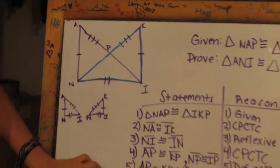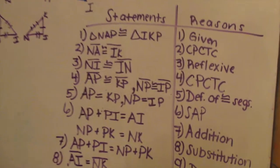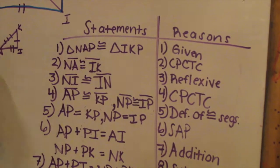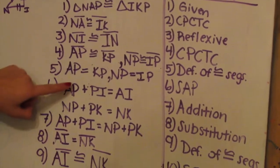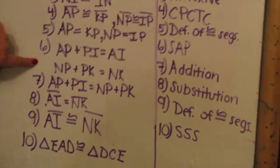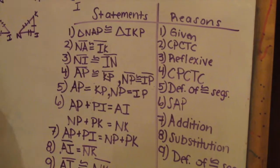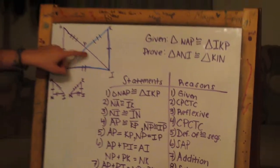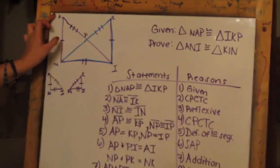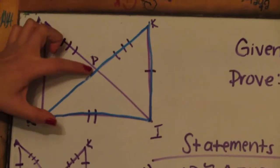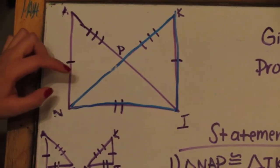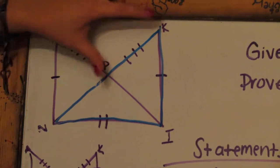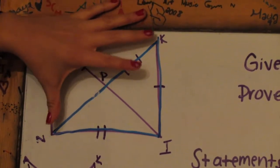And moving on to step 5, which is the definition of congruent segments. You just change the congruent signs into equal signs as we did right here. And then we did segment addition postulate. And that just means that AP plus PI is going to equal the whole segment of AI. And then NP plus PK is going to equal the whole segment of NK.